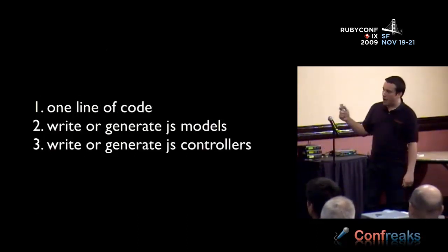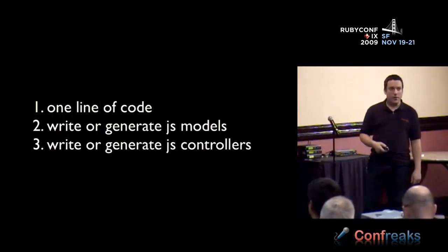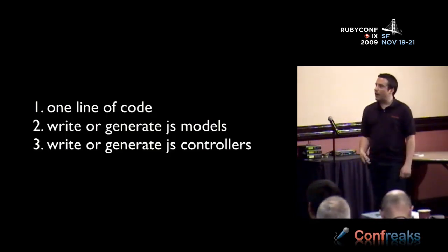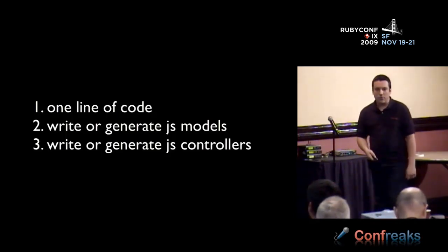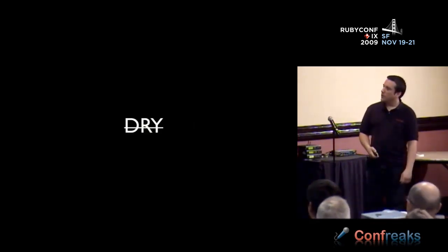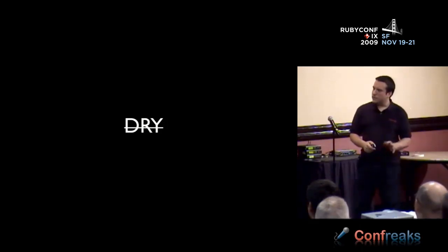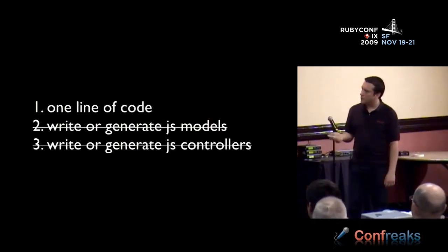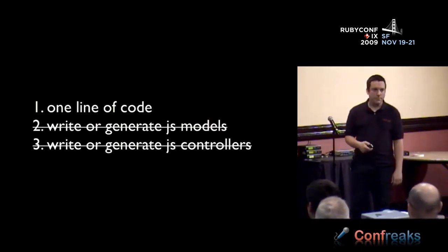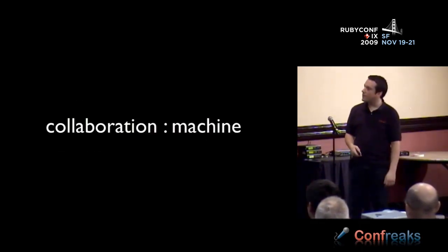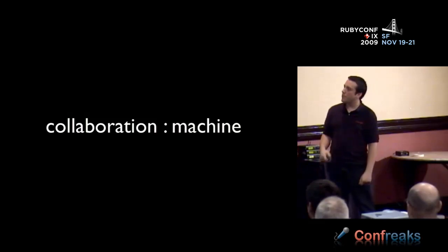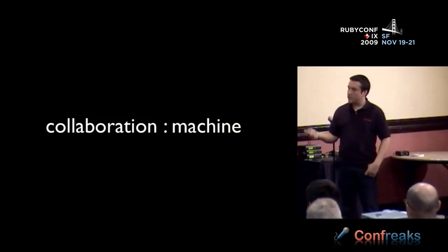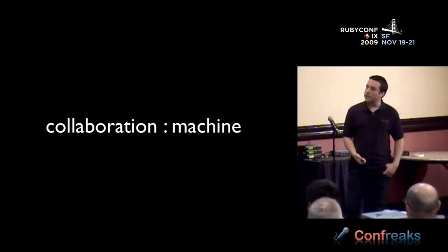So now we've got one line of code, but we're still writing and generating JavaScript models and controllers. There are still things that aren't really DRY there. So let's see if we can take those out and dry this up a little bit more using machine-based collaboration.